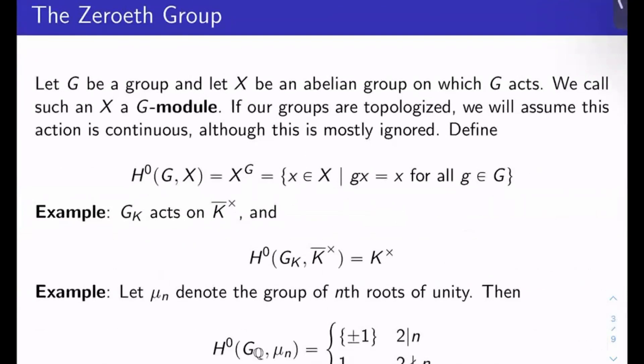So what's the zeroth Galois cohomology group? Let G be a group and let X be an abelian group on which G acts in the usual sense. We'll call such an X a G-module. If our groups are topologized, we're going to assume the action is continuous, but this is mostly ignored. The zeroth cohomology group H⁰(G,X) is defined to be X^G, the set of all x in X such that g·x = x for all g in G.